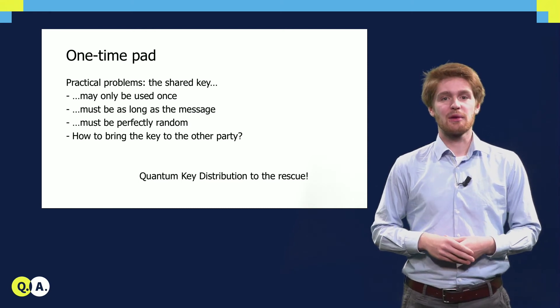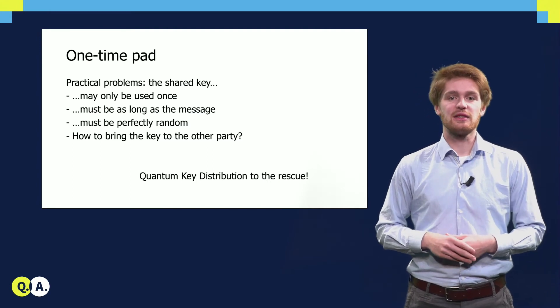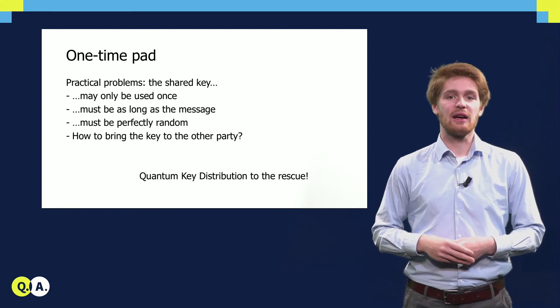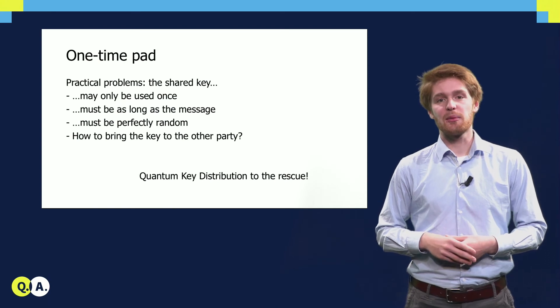There are several ways to overcome these problems, mostly by simply using different schemes, which have disadvantages that the one-time-pad scheme does not have. But there is a way we can still use the one-time-pad, and that is by the use of quantum key distribution, which will be the topic of the next video.